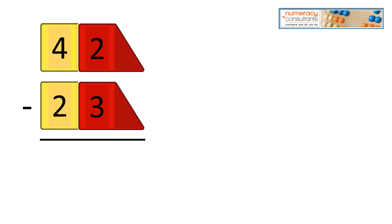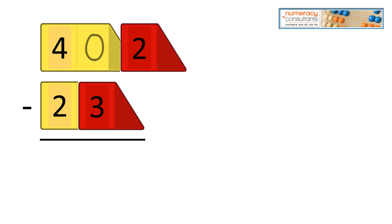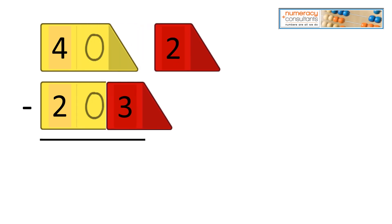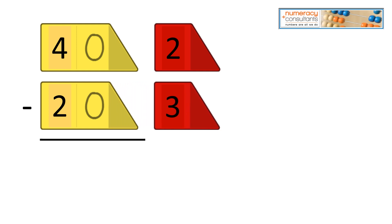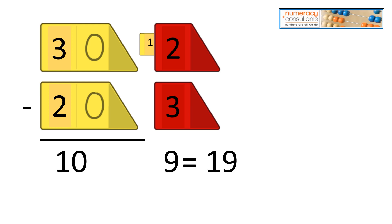42 minus 23. Again, 2 minus 3 doesn't work, so we need to ungroup that 40. We ungroup it, send that 10 over, and now we have 12 minus 3. Our 40 is now a 30. So 30 minus 20 is 10, 12 minus 3 is 9, and our answer is 19.